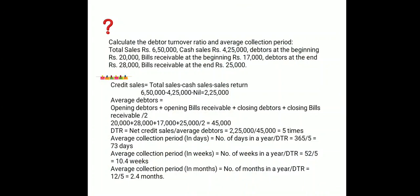Average Collection Period in days = number of days in a year divided by Debtors Turnover Ratio = 365 divided by 5 = 73 days. In weeks = 52 divided by 5 = 10.4 weeks. In months = 12 divided by 5 = 2.4 months. These are the three ways to calculate the average collection period.